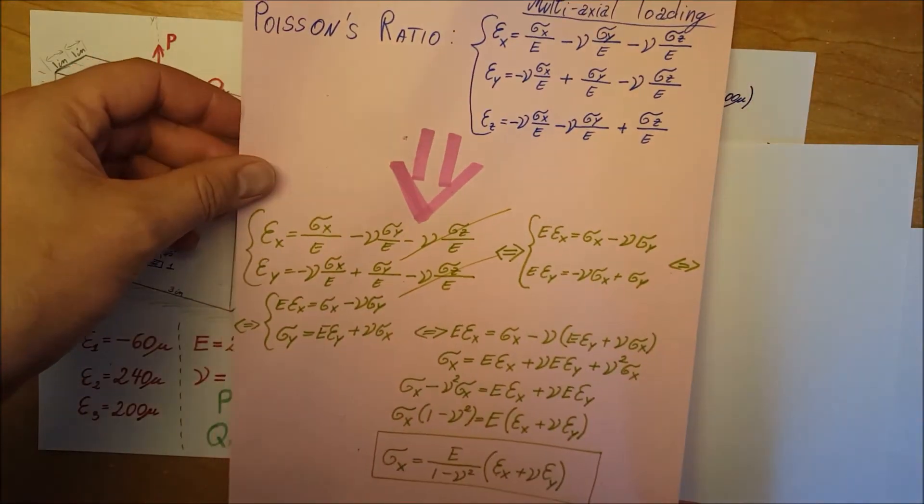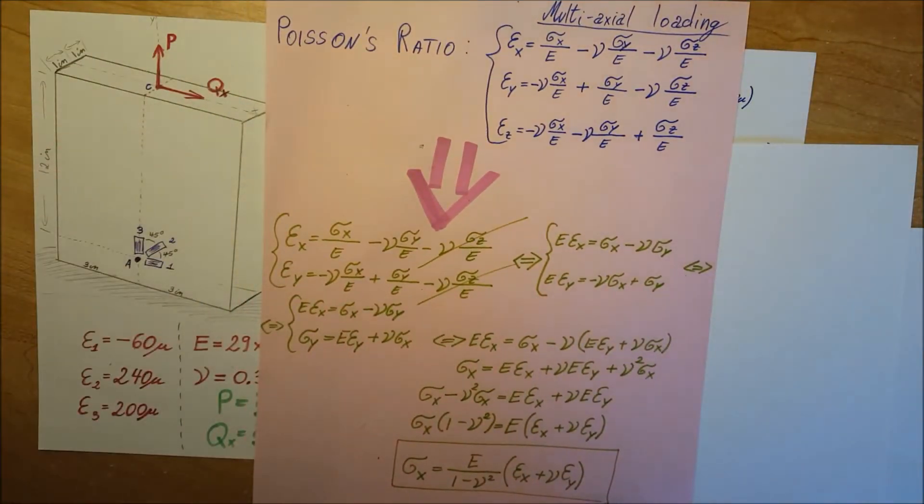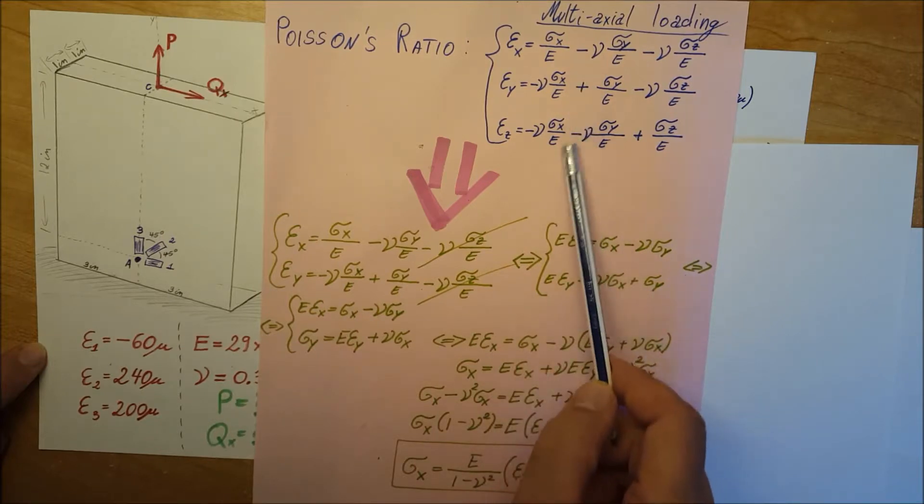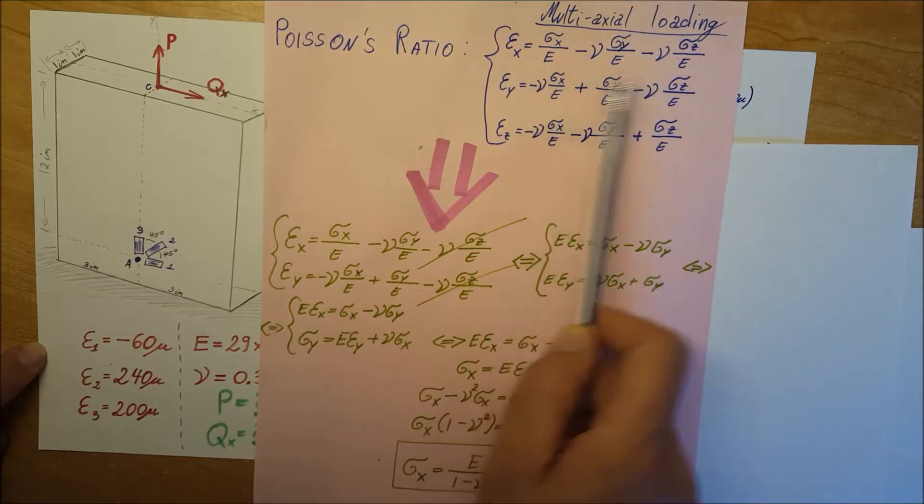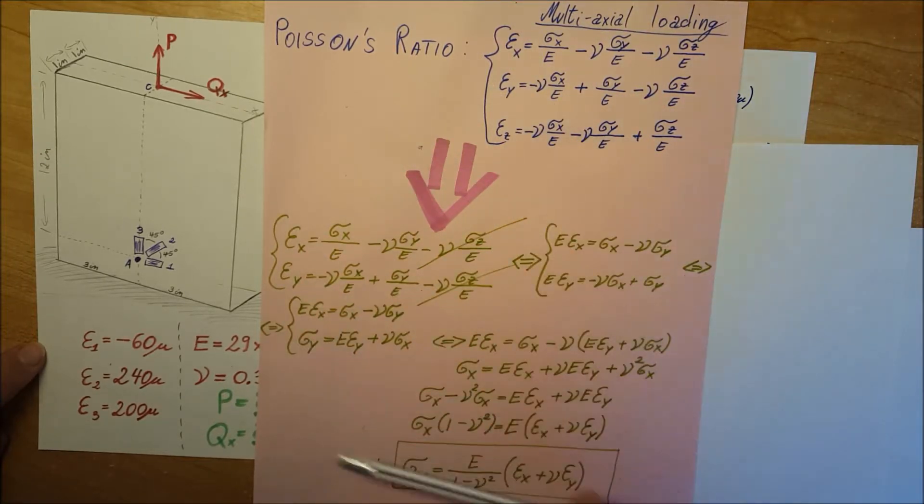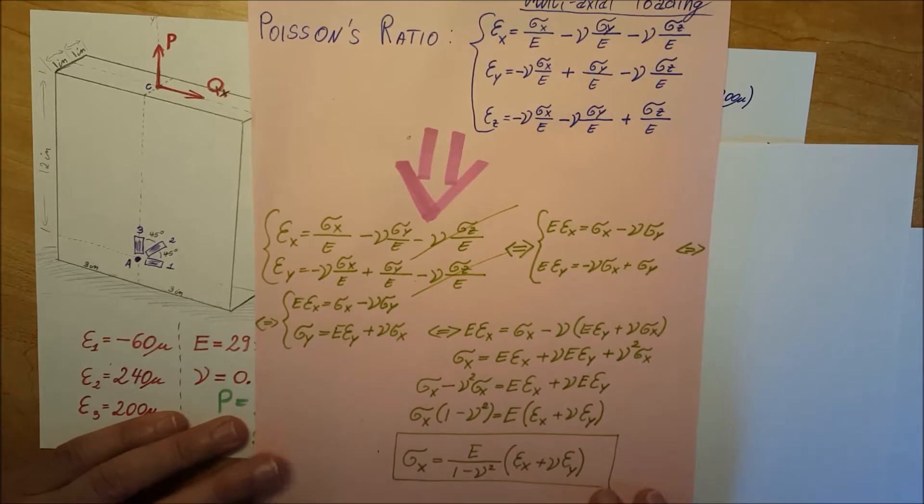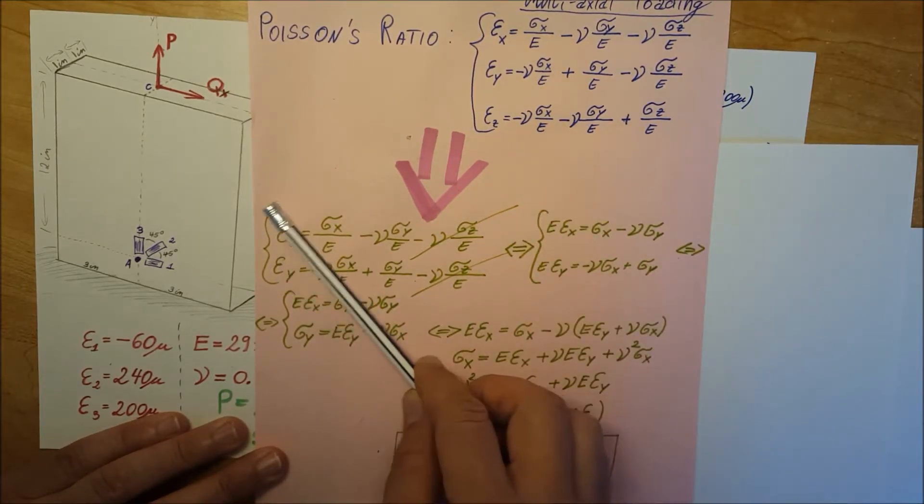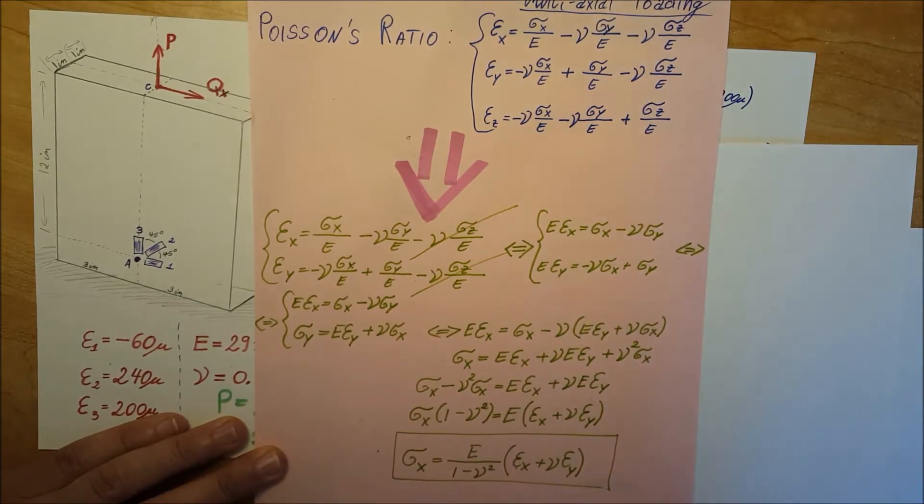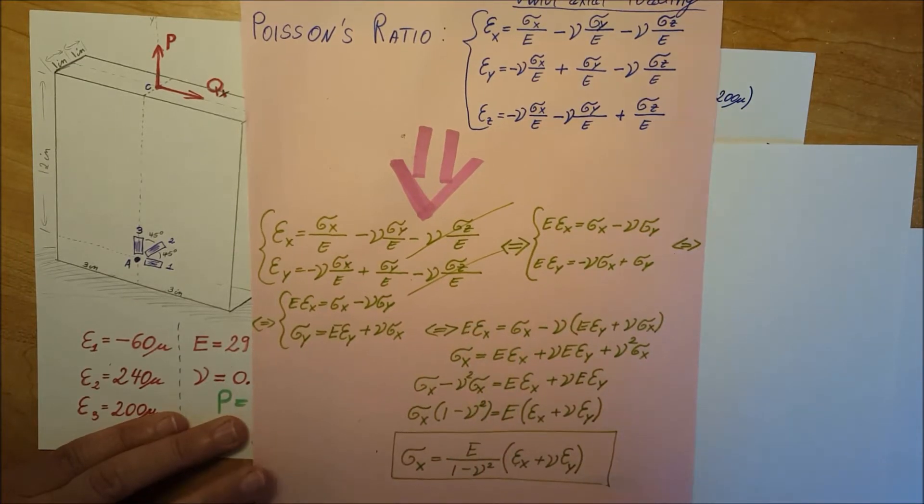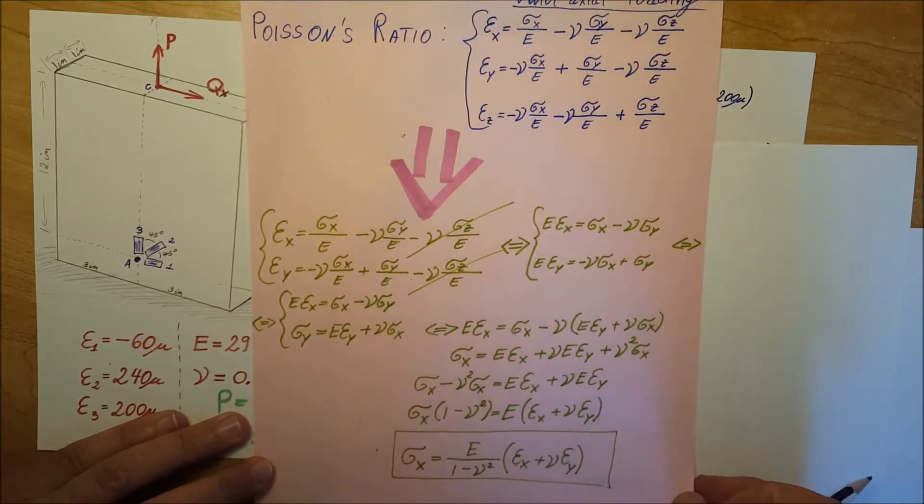The next set of formulas I'm going to use is related to stress. We're dealing with a three-dimensional object here, so we'll use Poisson's ratio. These are the three main formulas for multi-axial loading. From these, we can group them up as a system of equations and solve for σx and σy. Pause the video and take a look if you'd like.